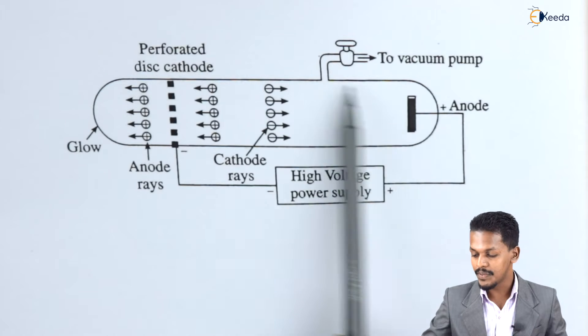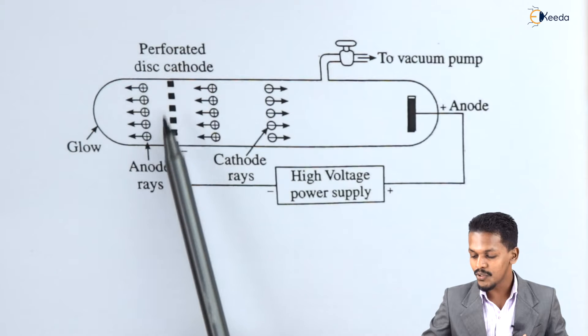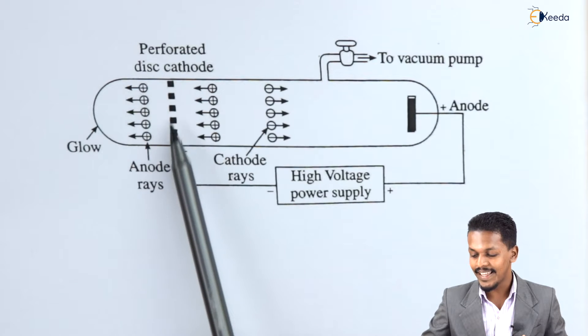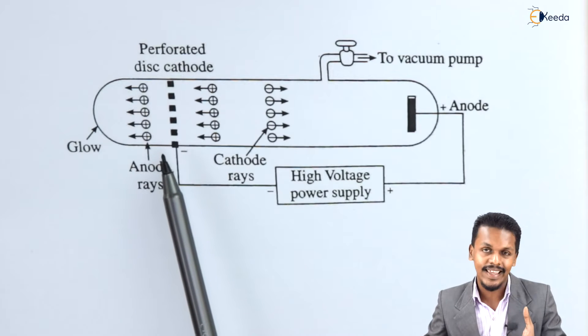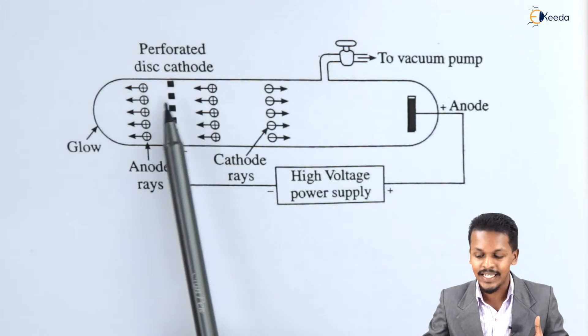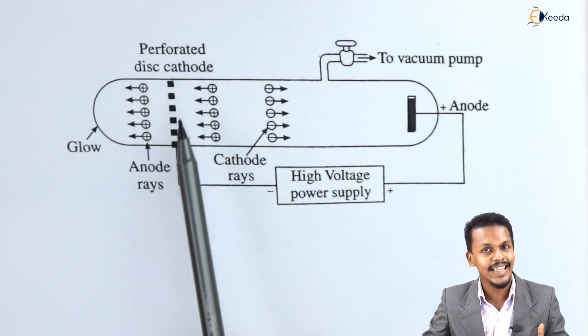Here at this point you could find the anode which is basically fused in this discharge tube, and here also there is cathode. But this cathode is not a regular disc cathode. Obviously here there are many pores in it which is called perforated disc cathode.